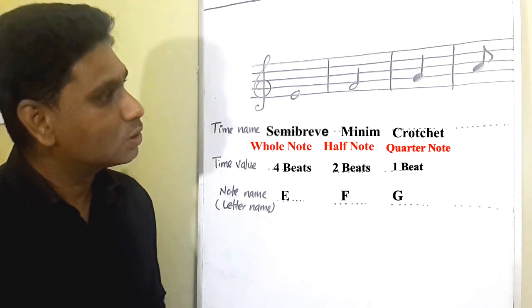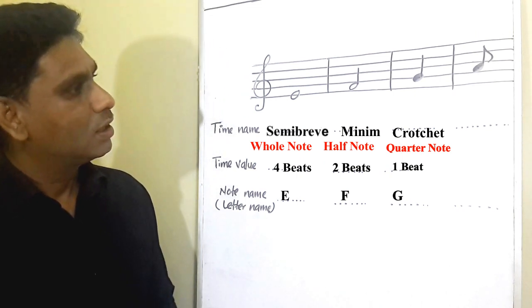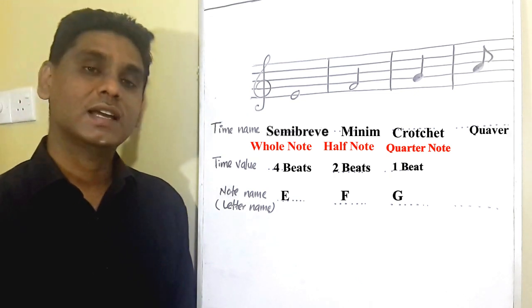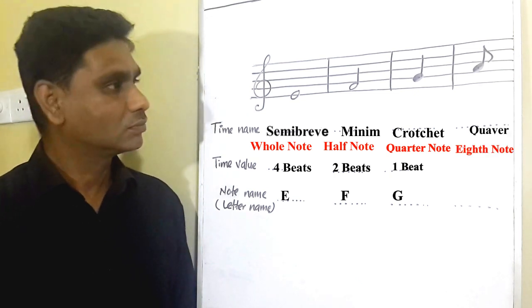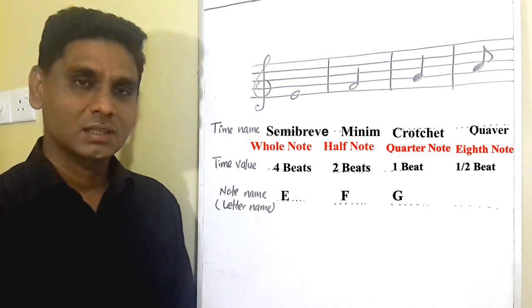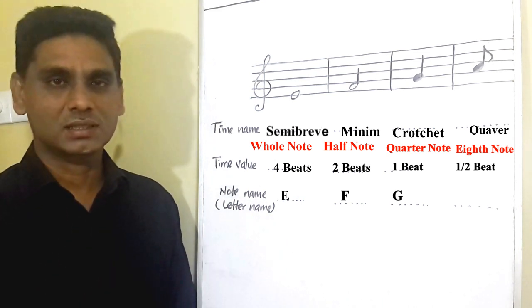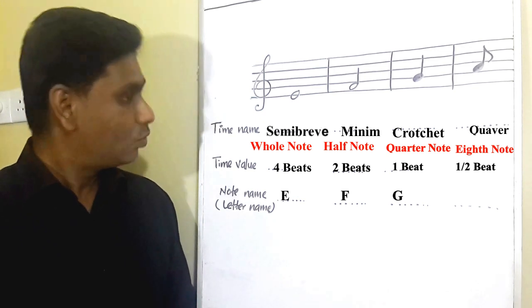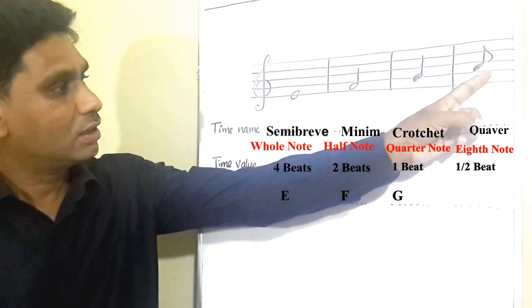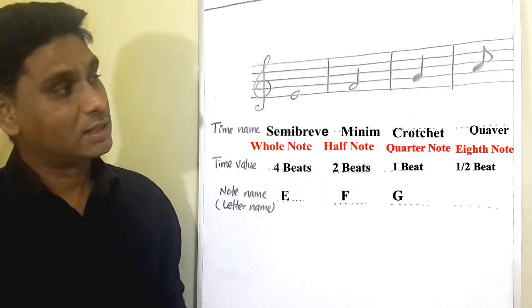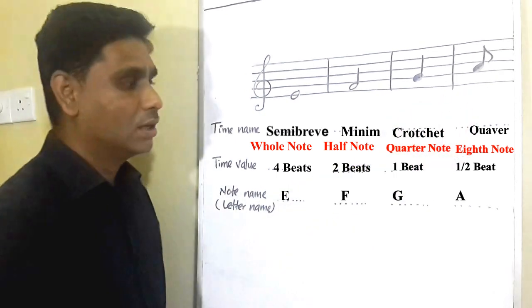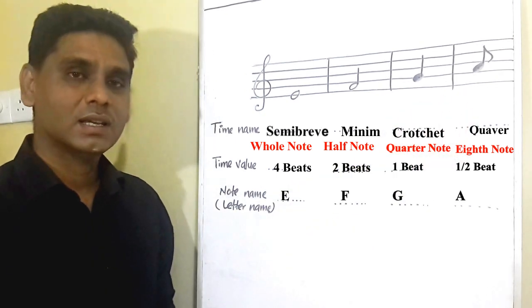Let's go to the fourth music note. This is called Quaver, or Eighth note, which has half a beat. And what is the note name of this note? It is located in the second space. The second space is A. Therefore, this quaver's note name is A.